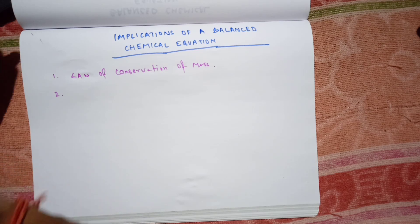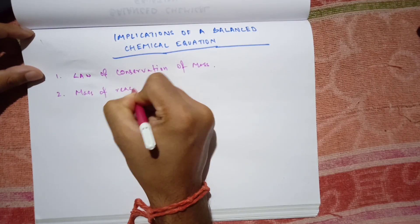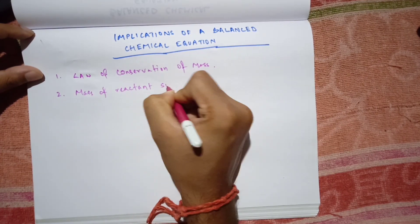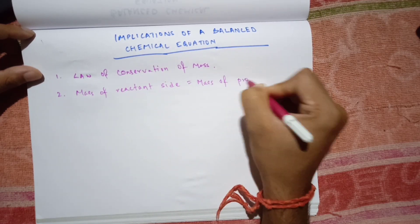The second point: it's clear that the total mass of an element in the reactant side will be equal to the total mass of the element in the product side. So mass of reactant side should be equal to the mass of product side.